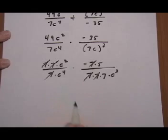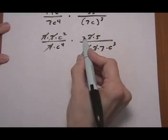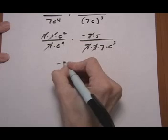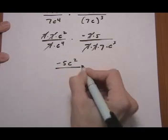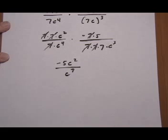We could keep canceling the c's but just so it doesn't look too confusing let's rewrite what we've got so far. We have minus 5 c squared on top over c to the seventh if we add the exponents on the bottom.